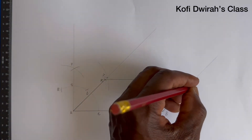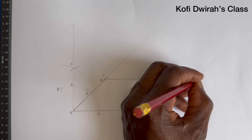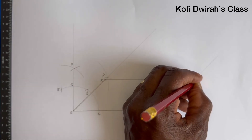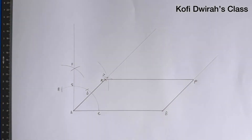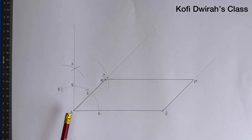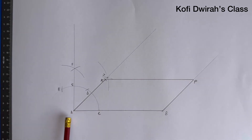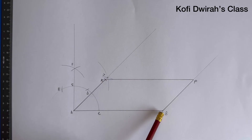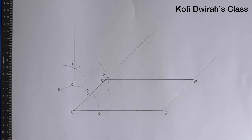Let's consider here to be point P. So line AB is equal to KP, and line AK is equal to line BP. So we have our parallelogram here — this is how to construct a parallelogram.